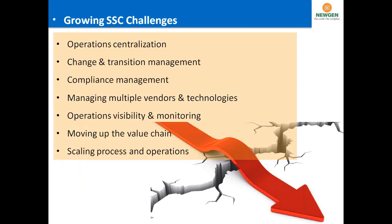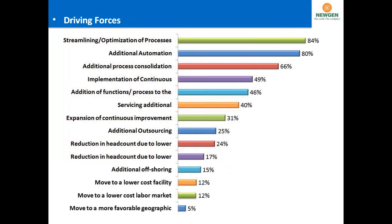The key challenges that come up when we talk about F&A and shared services automation include operational centralization, which is one of the major topics discussed in global seminars and surveys. There is also change and transition management, compliance management, managing multiple vendors and technologies, and moving up the value chain. A lot of shared services that are already running face this challenge — how finance heads and CFOs can move up in the value chain.